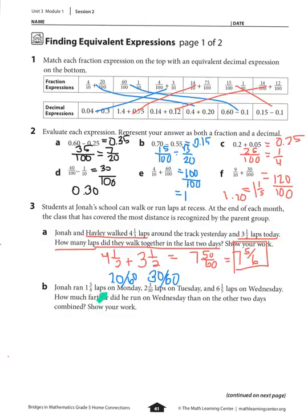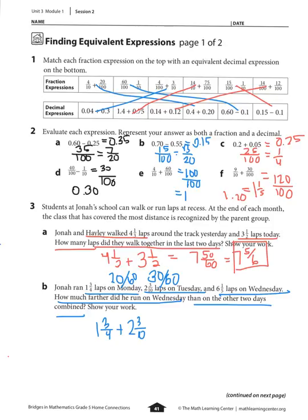Part b: Jonah ran 1 and 3 fourths laps on Monday, 2 and 3 tenths laps on Tuesday, and 6 and 1 fifth laps on Wednesday. How much farther did he run on Wednesday than the other two days combined? First I need to add Monday and Tuesday. Thinking about money, 3 fourths is 75 cents and 3 tenths is like 3 dimes, or 30 cents. Together that equals 4 dollars and 5 cents, or 4 and 5 hundredths.